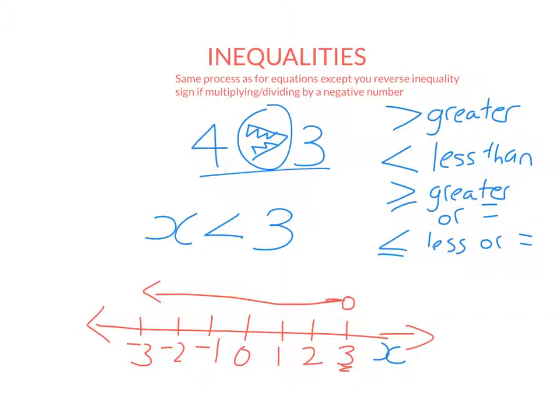So just so you know, if we have an open dot, so it's not colored in basically, that means less than or greater than. It doesn't include that number because 3 is not less than 3. So that's what this circle being open, not shaded, means, that it doesn't include this number down here, 3.